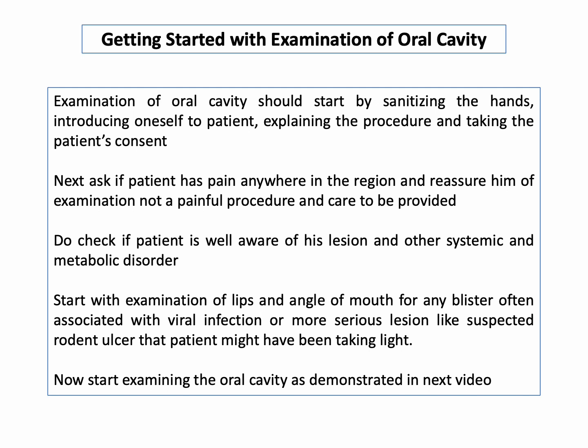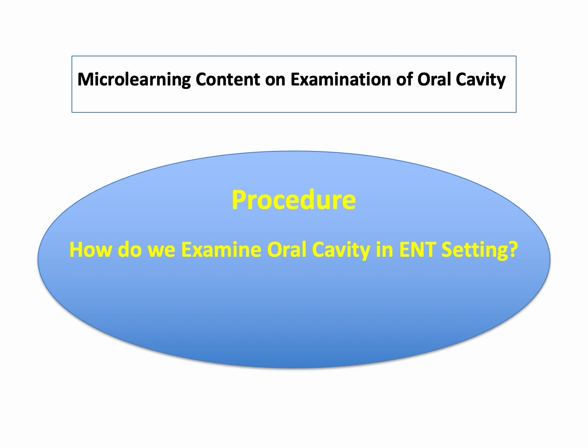Do check if the patient is well aware of their lesion and any other systemic and metabolic disorders. Start with examination of the lips and angle of the mouth for any blisters, often associated with viral infection, or more serious lesions like a suspected rodent ulcer. Now let's watch the procedure of how to examine the oral cavity in an ENT setting.